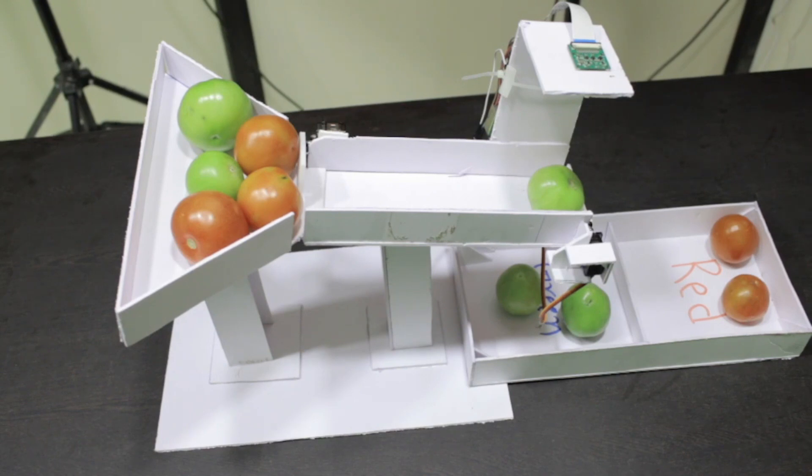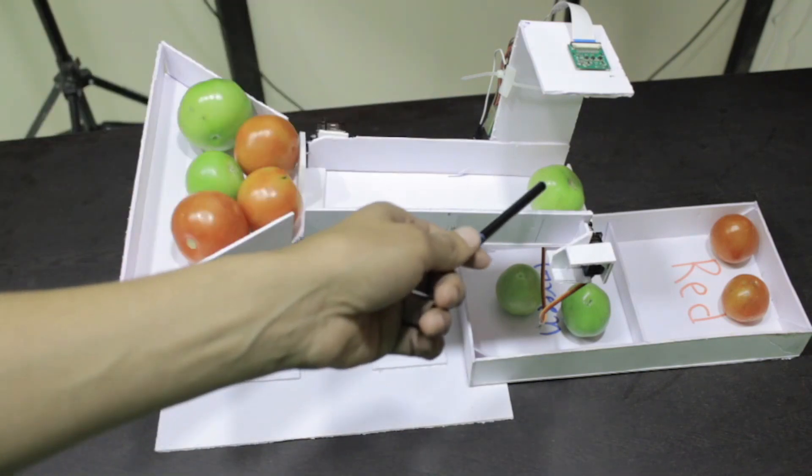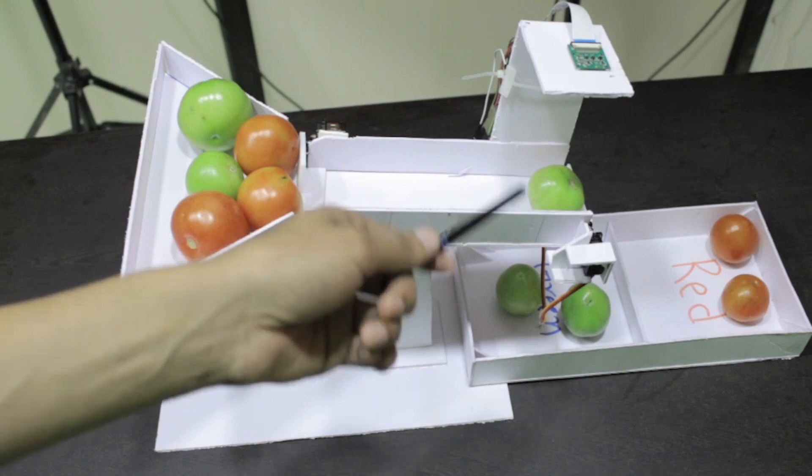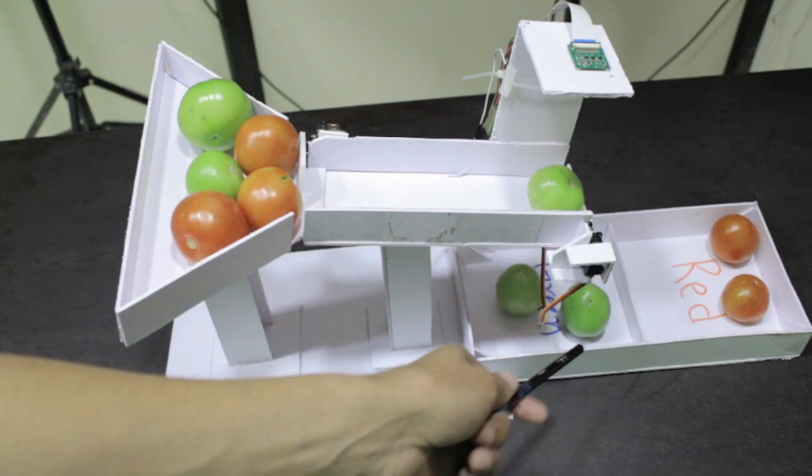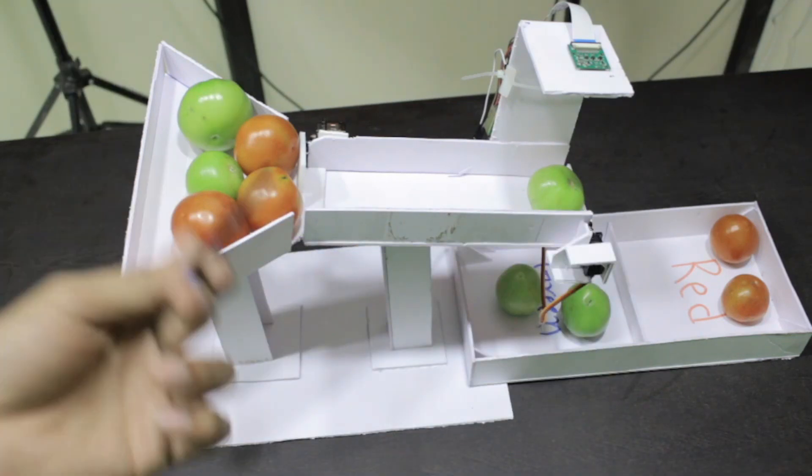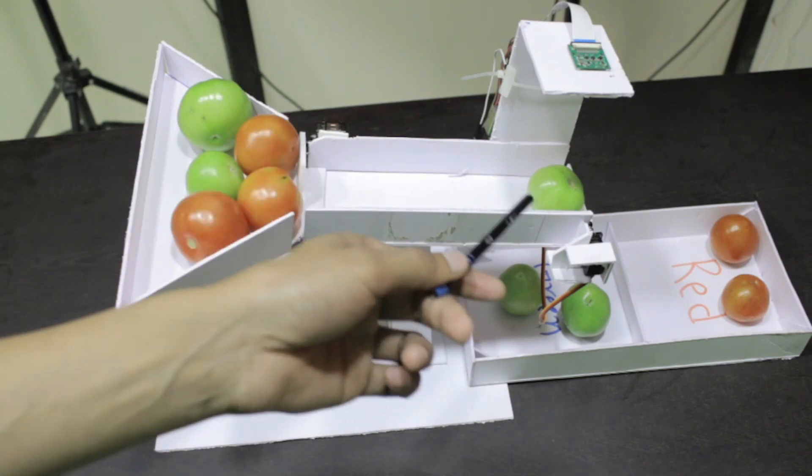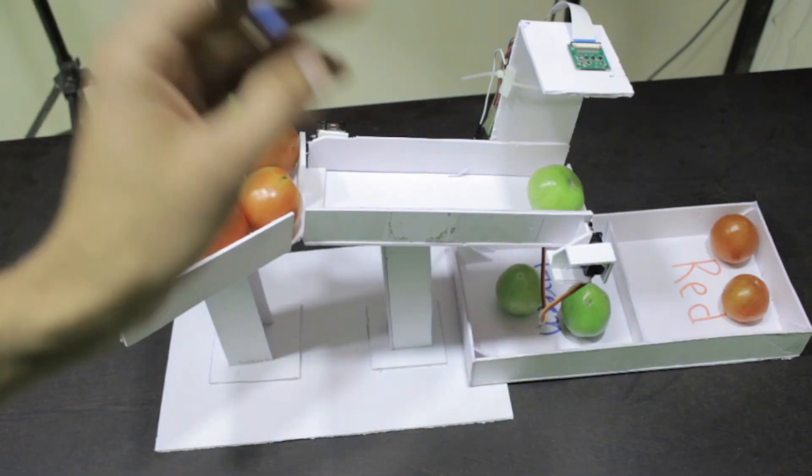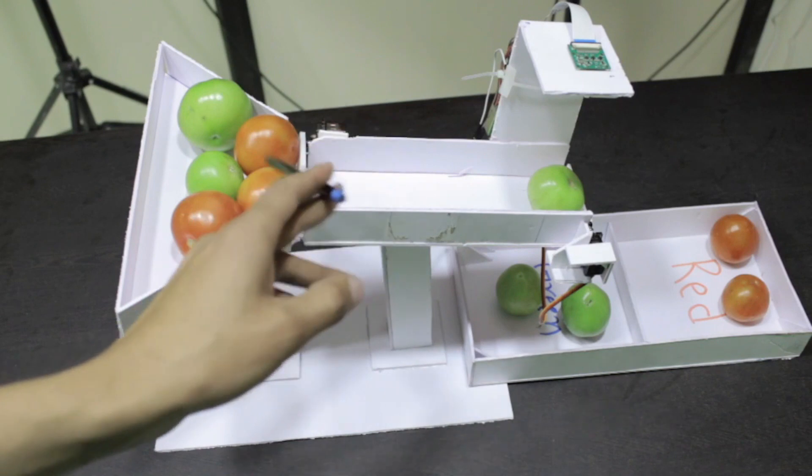If we talk about its working, when we run the code it will first process this tomato image and then it will drop it to its respective box. After that it will move these tomatoes one by one and follow the same procedure. It will first detect the tomato and then move the servo motor according to the color detected.